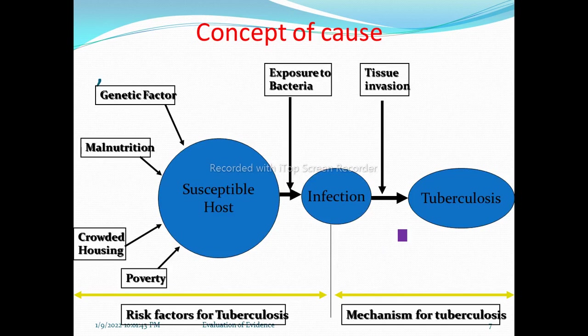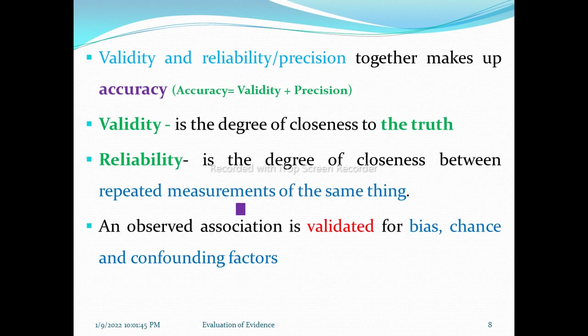For example, in tuberculosis: a susceptible host, genetic factors, malnutrition, crowded housing, and poverty are all contributing factors. Exposure to Mycobacterium tuberculosis leads to infection of lung tissue and development of tuberculosis. Mycobacterium tuberculosis is the necessary cause for tuberculosis, while all the other factors together form sufficient causes.